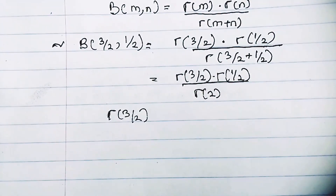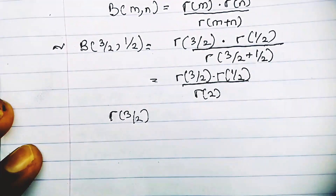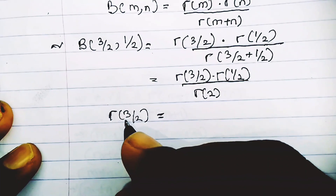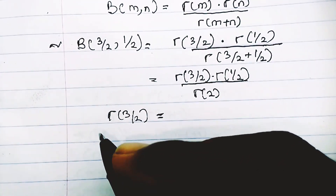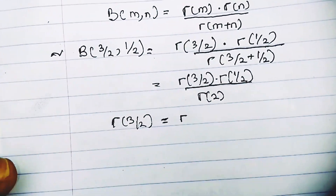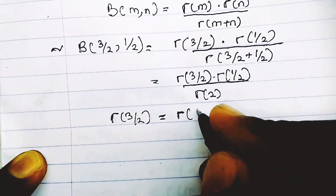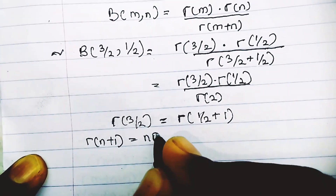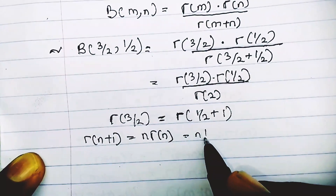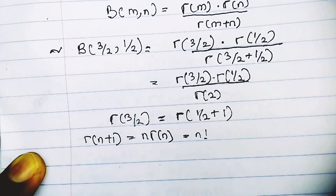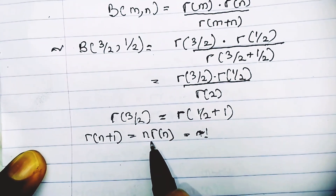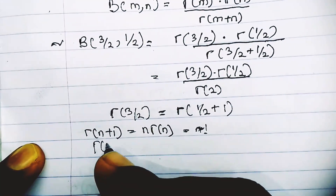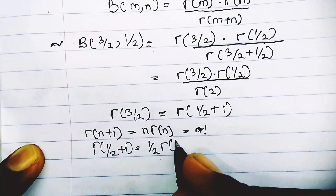To evaluate Γ(3/2), we express it in the form Γ(n+1). So Γ(3/2) = Γ(1/2 + 1). We know that Γ(n+1) = n·Γ(n) — we can't use n factorial for fractions, only this recurrence. So Γ(1/2 + 1) = (1/2)·Γ(1/2).